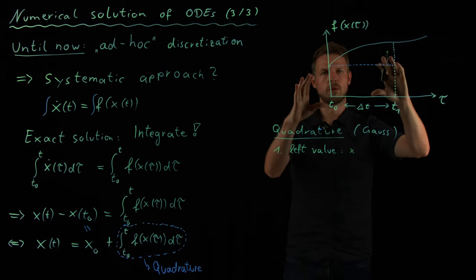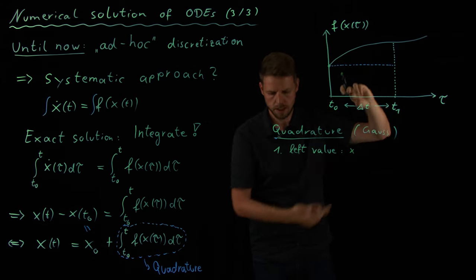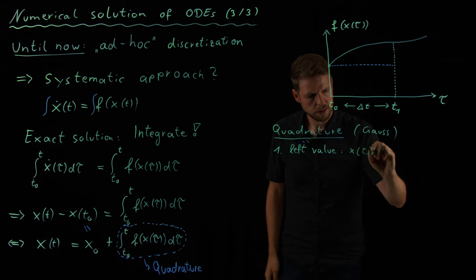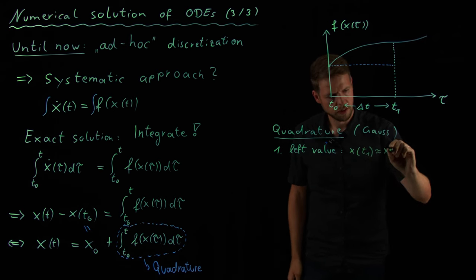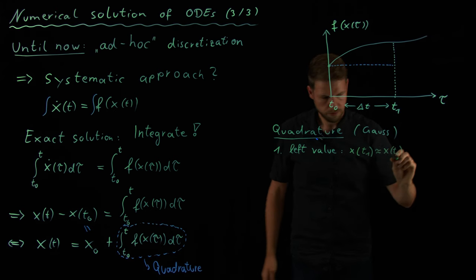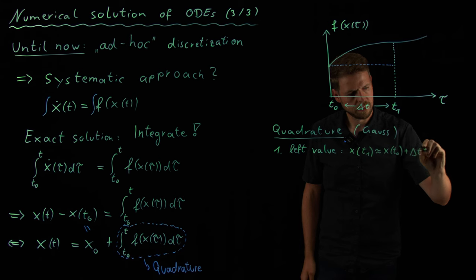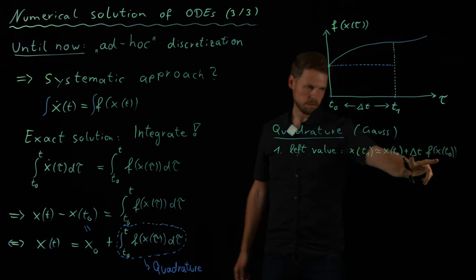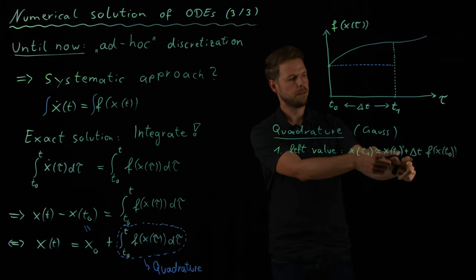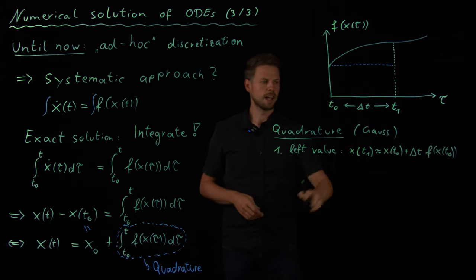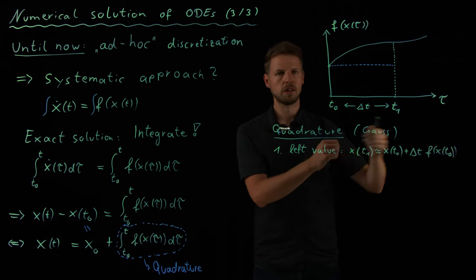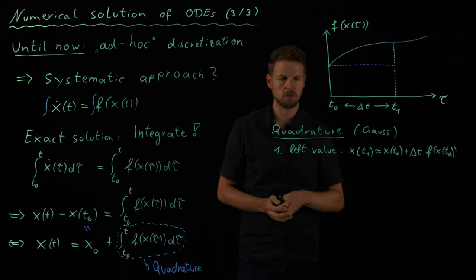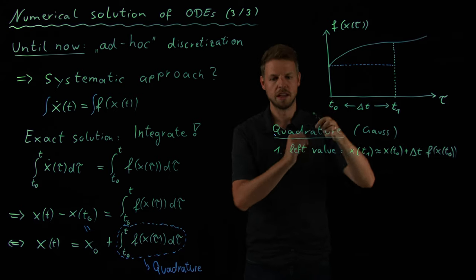So, if we just take this value, then what we get is x. So, the integral is approximately the width times the function value. And so, what we get is x of T1 is approximately x of T0 plus delta T times f of x of T0. So, the integral is replaced by the width, delta T, times the left-hand side. And we have seen this before, remember? This is precisely the explicit Euler scheme. So, this can be incorporated in this quadrature family by considering the left value.